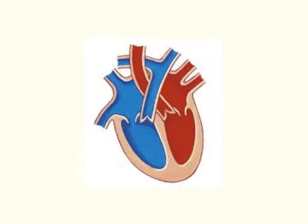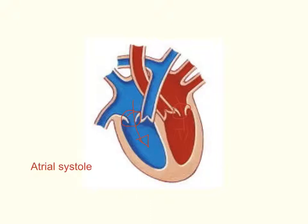In the first stage of the cardiac cycle, blood is already in the atria and the atria are now contracting, pushing the blood through the atrioventricular valves and filling the ventricles. This happens simultaneously on both sides of the heart. In the diagram you can recognise this because the atrioventricular valves are open and the bottom of the heart looks engorged with blood. This stage is known as atrial systole — systole means something is contracting, in this case the atria.